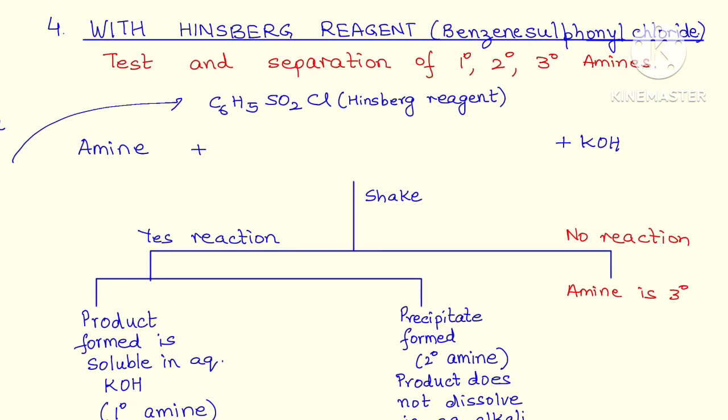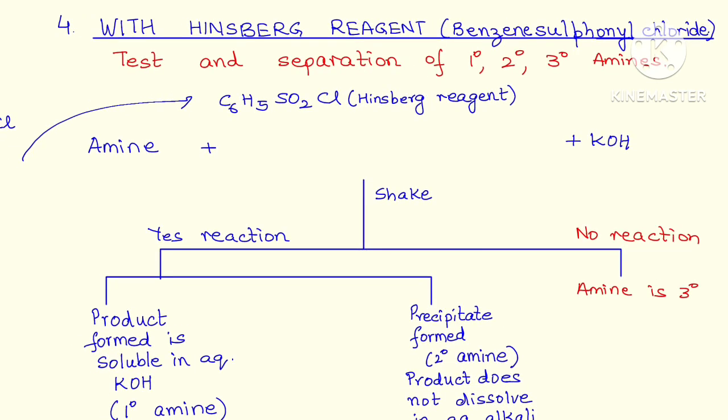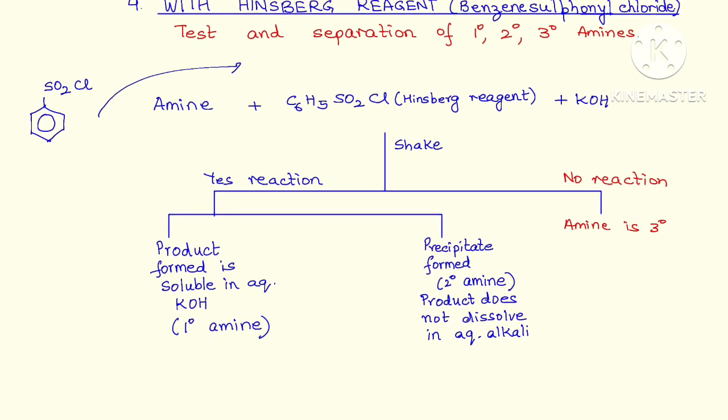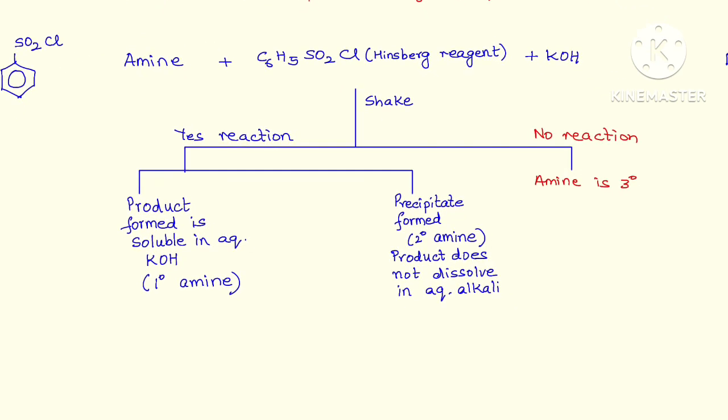Now how do we use it to identify primary, secondary or tertiary amines and how do we use it to separate? I have tried to depict this in the form of a very simple chart. What we do is we shake the amine with Hinsberg reagent and aqueous solution of an alkali. We can either use potassium hydroxide or sodium hydroxide.